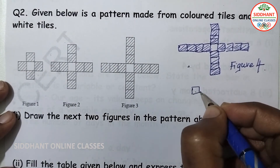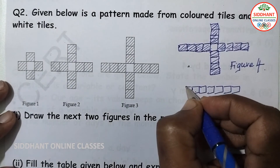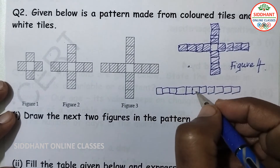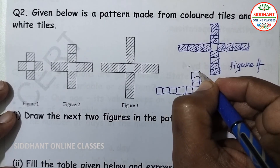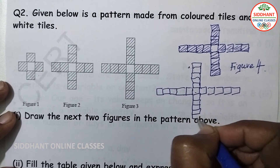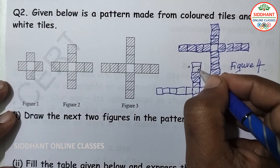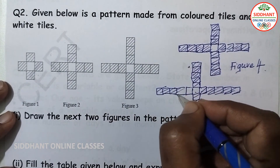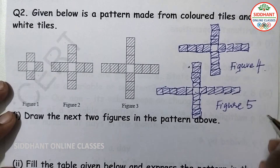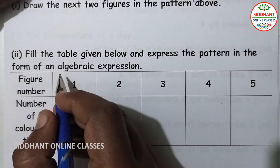For figure 5, it will have 5 tiles on each side. The center part will be a white tile, and the colored tiles go 1, 2, 3, 4, 5 on each side. So these are the next two figures in the above pattern.